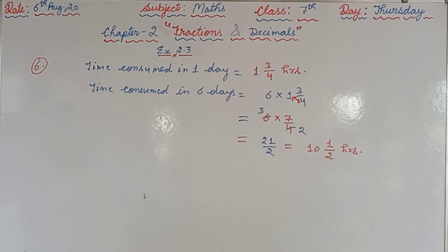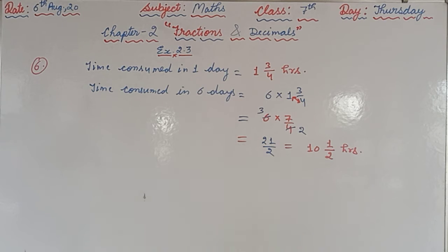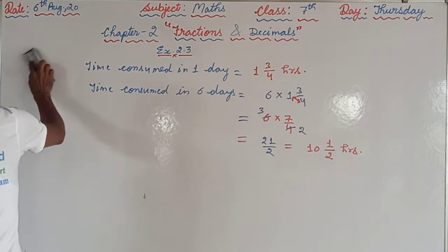Question number seven: a car runs sixteen kilometers using one liter of petrol. How much distance will it cover using two and three-fourths liters of petrol? For this, we are supposed to multiply sixteen by two and three-fourths to get the answer. At the same time, we will also discuss question number eight.